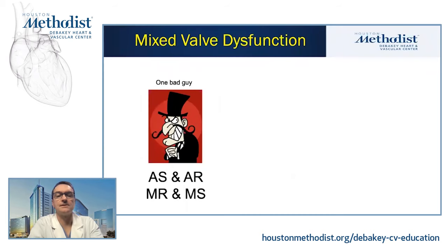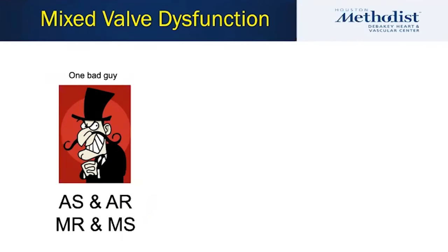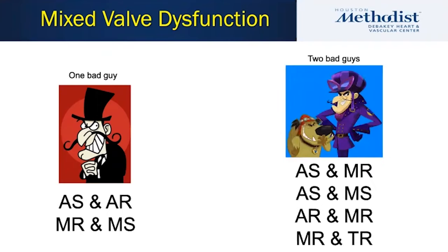Mixed valve disease is really a big topic, and there are different ways to conceptually organize your thinking around this. One approach is to think about one valve that has two relatively independent pathologies — that's sort of 'one bad guy' thinking. The other challenge is two bad guys: aortic stenosis combined with MR, or AS with MS, or AR with MR, or MR with TR. Those are sort of six combinations of the common phenotypes we would see clinically.